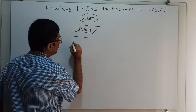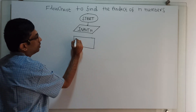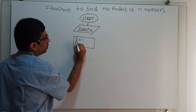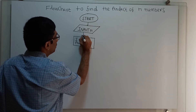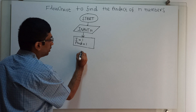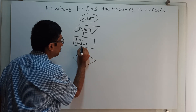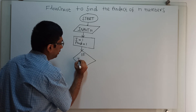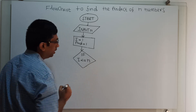Next, I am utilizing the variable i equal to 1 and prod equal to 1. Then I am checking the condition: if i is less than or equal to n.